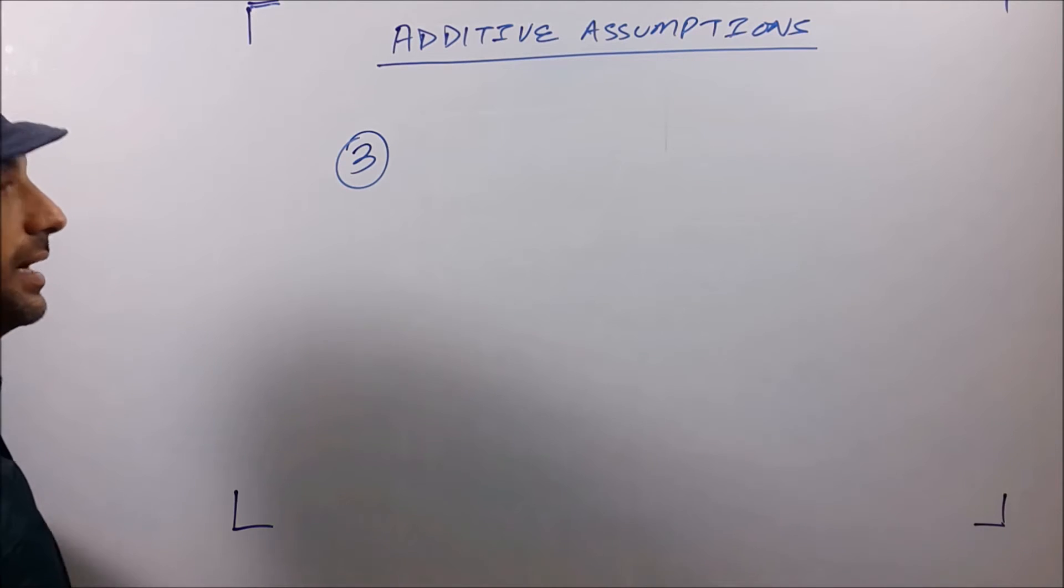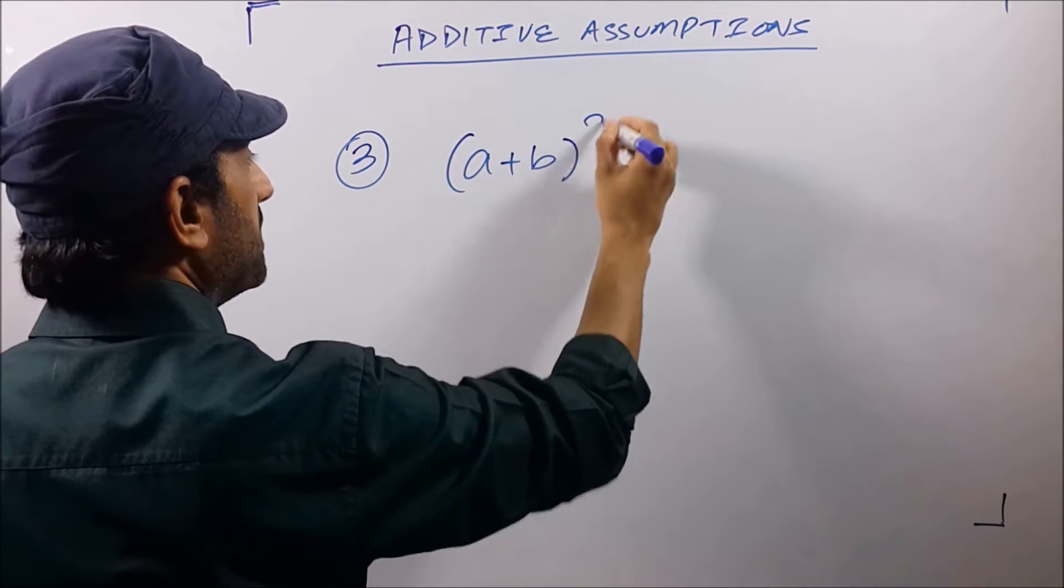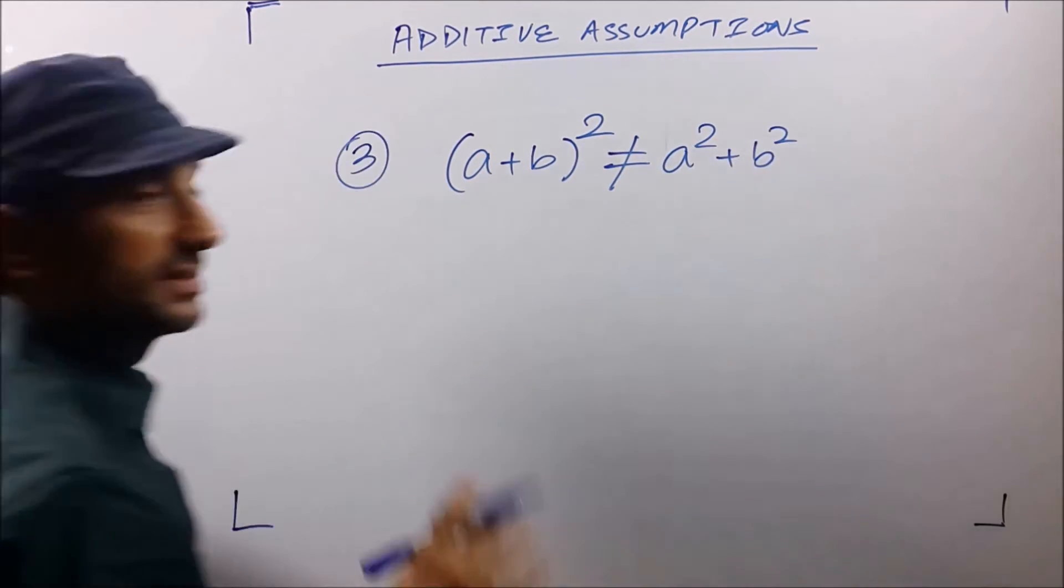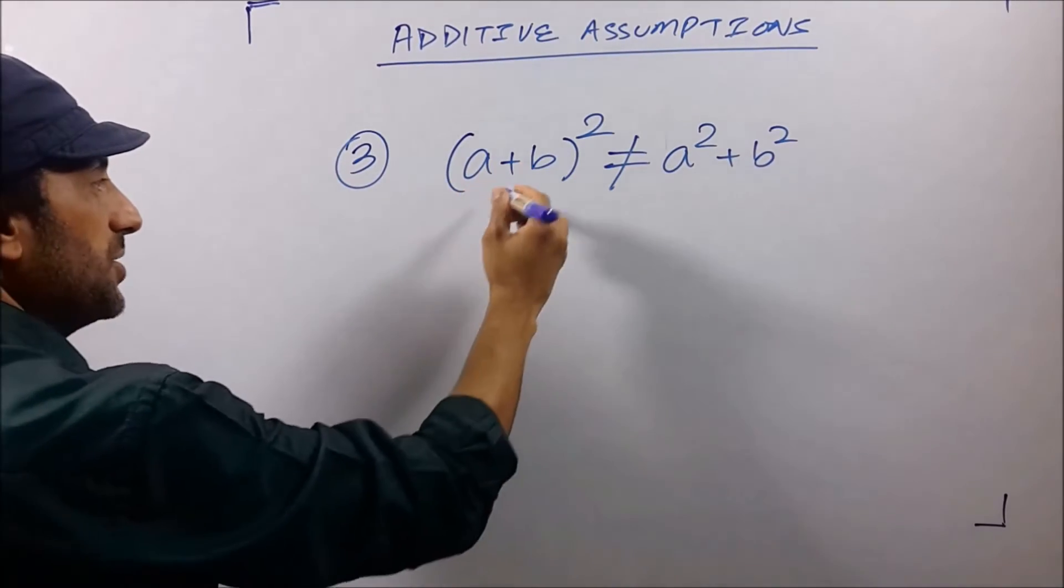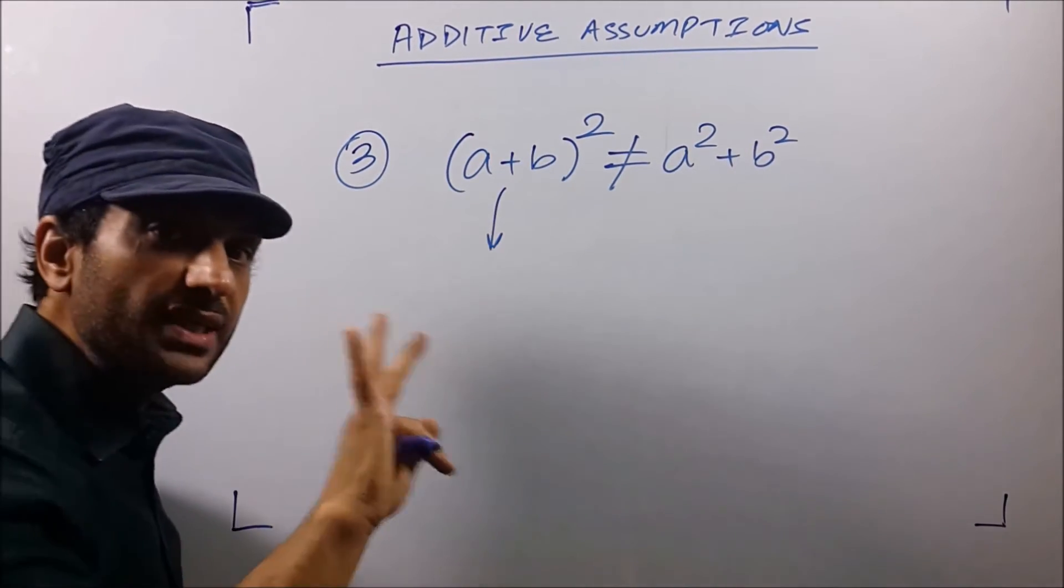The third is a binomial expansion which is (a+b)² and many write a²+b². This is wrong. (a+b)² is a binomial expansion and it'll give you three terms.